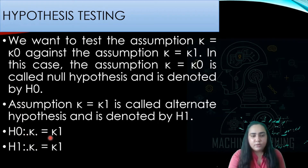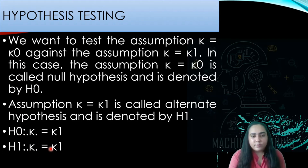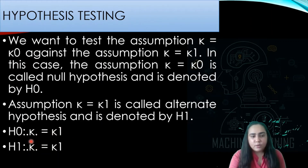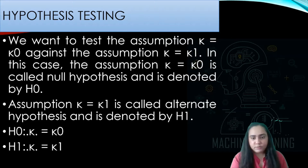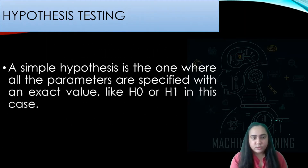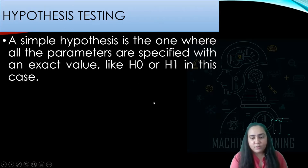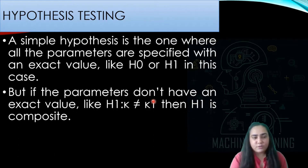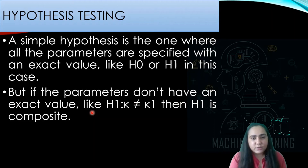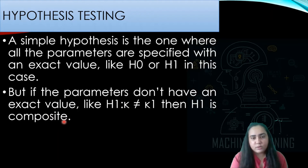We usually write it as: H0 is k equal to k0, and H1 is k equal to k1. If you are performing a simple hypothesis test, then all the parameters are specified with exact values — the values of H0 and H1 will both be specified exactly. But if the parameters don't have an exact value, like H1 where k is not equal to k1, then H1 is called composite, because you have multiple possibilities for H1.